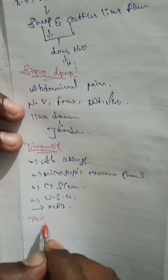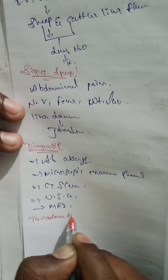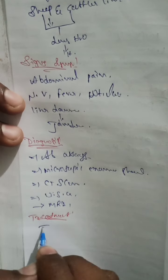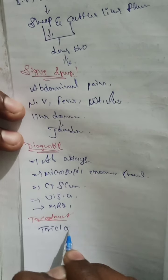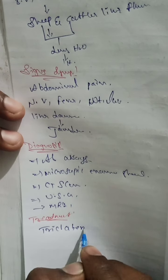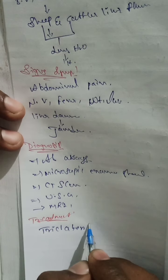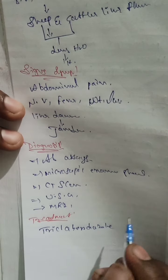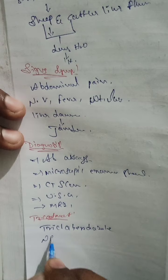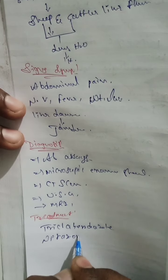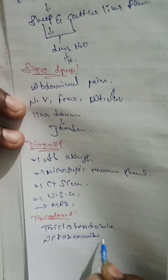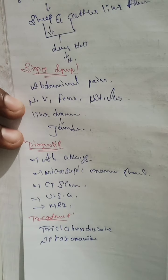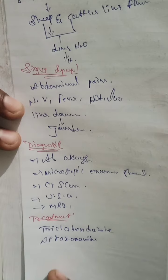What is the treatment? The treatment involves Triclabendazole or Nitazoxanide. These two drugs are available for the treatment of Fasciola hepatica.